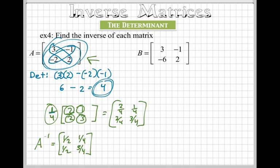Now for matrix B, let's check to see if this one has a determinant. So we're going to take the three and the two, multiply those together.